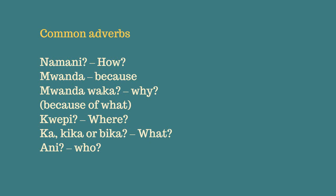So let's review one more time. Namanyi means how. Mwanda means because. Mwanda waka means why. Kwepi means where. Ka, kika, or bika means what. Annyi means who.